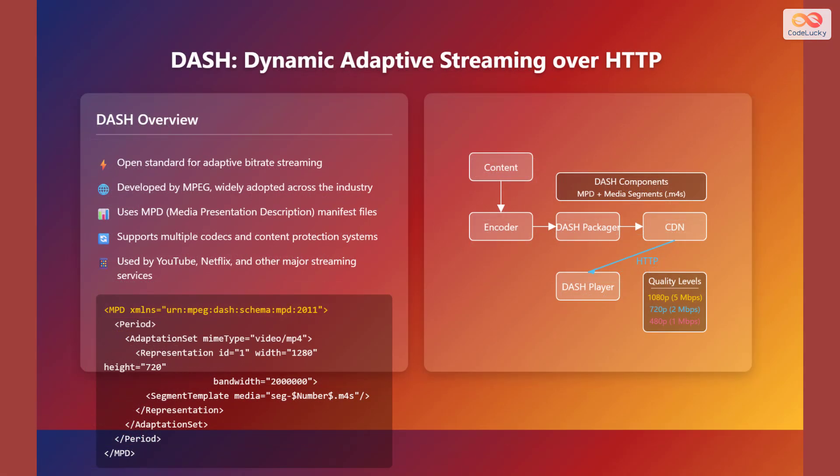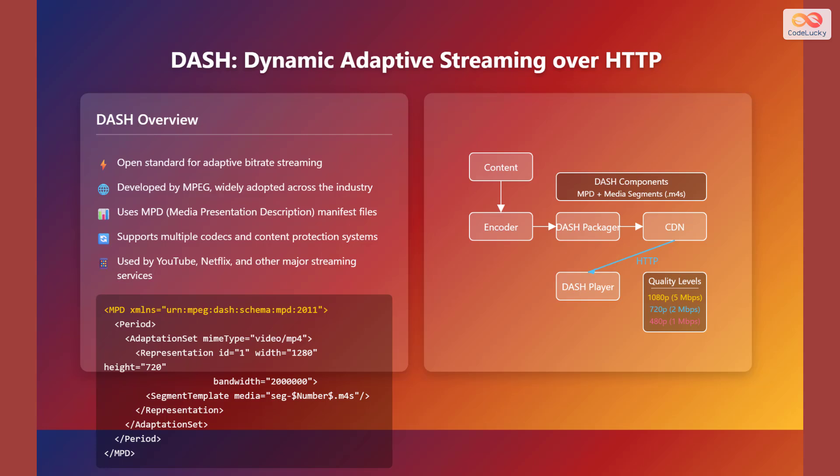Let's delve into Dynamic Adaptive Streaming over HTTP, or DASH. DASH is an open standard for adaptive bitrate streaming, developed by the Moving Picture Experts Group and widely adopted across the industry. It uses Media Presentation Description manifest files, which describe the structure and availability of the media content. DASH supports multiple codecs and content protection systems, and is used by major streaming services like YouTube and Netflix. The diagram shows the DASH architecture, from content source through encoding and packaging, delivery via CDN, to the DASH player selecting different quality levels based on network conditions. A sample MPD file defines adaptation sets, MIME type, representations, and segment templates.